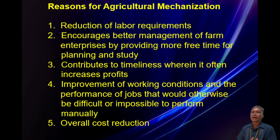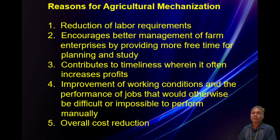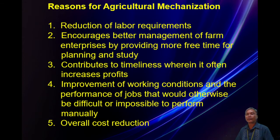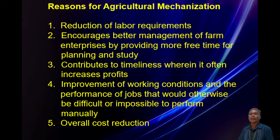Number five is overall cost reduction. In big farms, for example when you are harvesting rice, you need people to do the job but they are hired to other farms. So what are you going to do? You wait for them until they are available, and then all your crops are already fallen or hit by a typhoon, so the losses are greater. But if you have your own machine and you schedule your harvest, it's very easy — you can just do it and finish, so there are fewer losses.